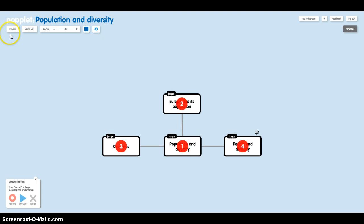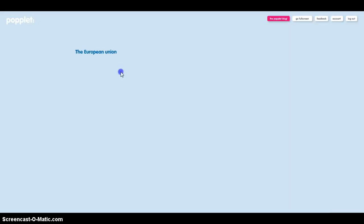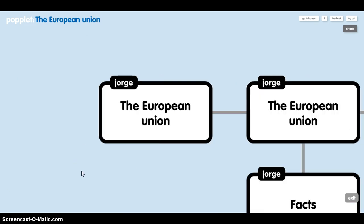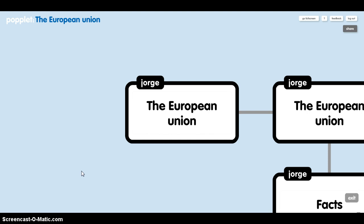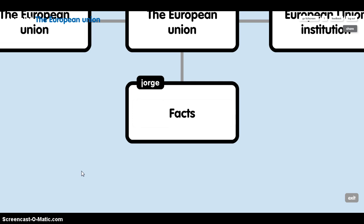Let's go to the final mind map: The European Union. The European Union is a confederation of countries. Facts: At first, the European Union concentrated on economic matters.